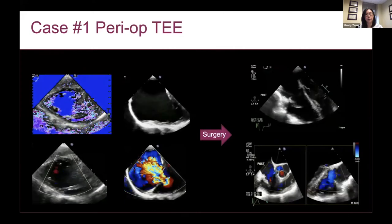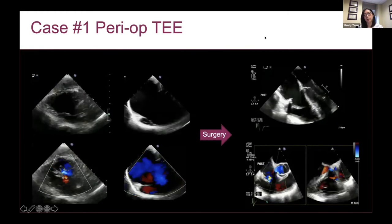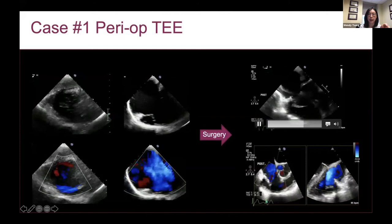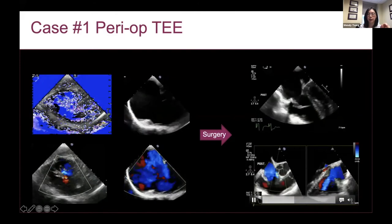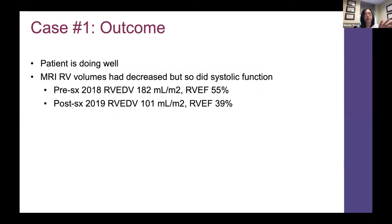The images on the left are the TEE images I had shown previously, and those on the right are the intraoperative images. He didn't have a valve replacement — what he had was a repair of his valve, with probably at least mild regurgitation in the post-op period. They went back on pump a couple of times to repair it. After surgery, MRI showed an effective reduction in regurgitation severity because the volumes decreased. However, his RVEF was truly about 39%, so he's been left with some RV dysfunction, but clinically he's been doing well with no signs or symptoms of right heart failure.